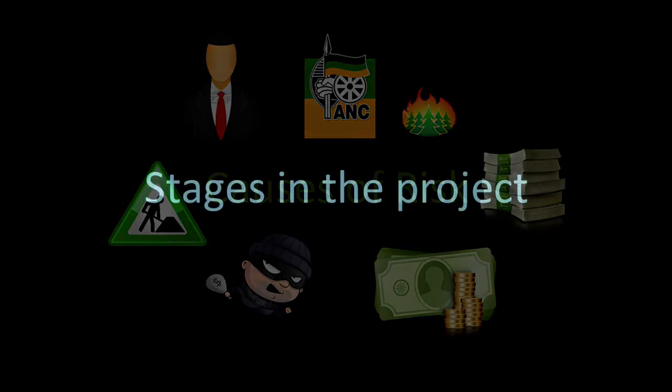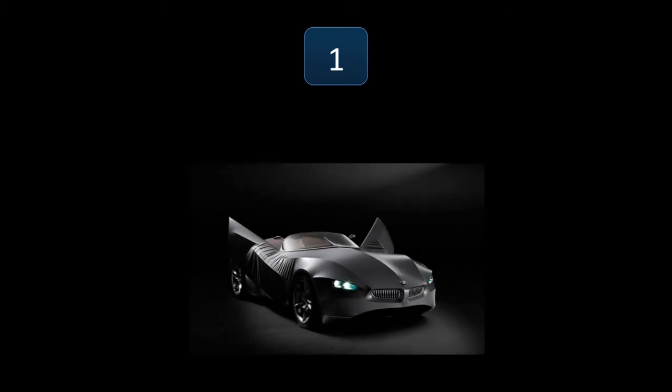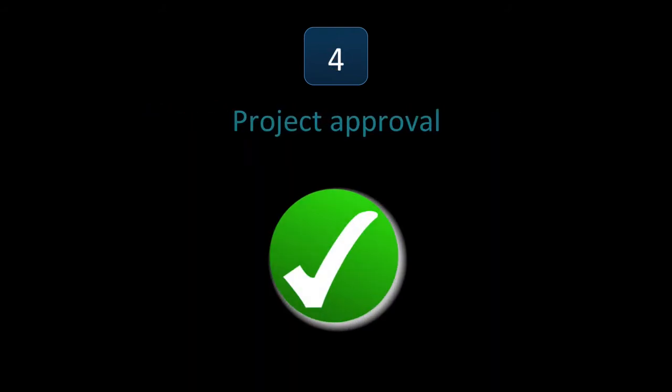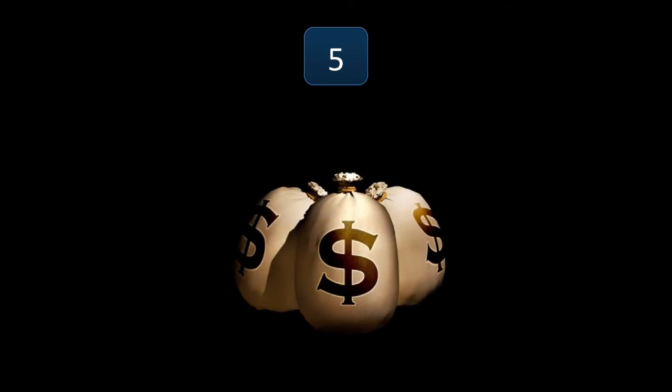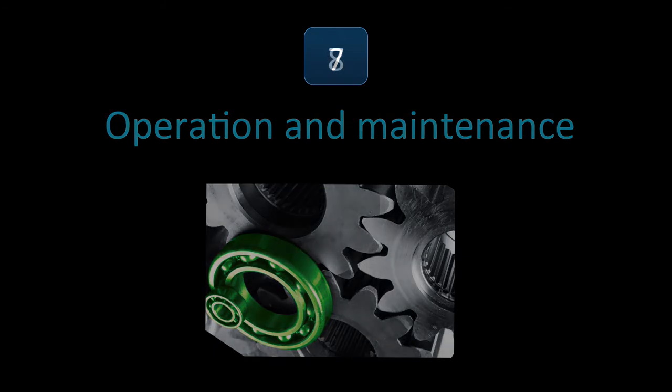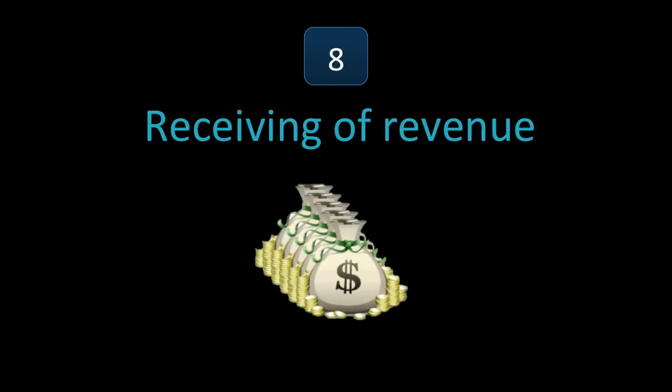Those are your causes of risk. The stages in the project: the first stage is the promotion of the concept. Number two is when you design. Three is when you do some negotiations. Four is you get the approval. Five is you get the cash to do it, so you raise your capital. Six is you actually do the construction. Seven is you maintain it. Eight is you get the cash in, so you receive your revenue. Nine is you terminate it or decommission.